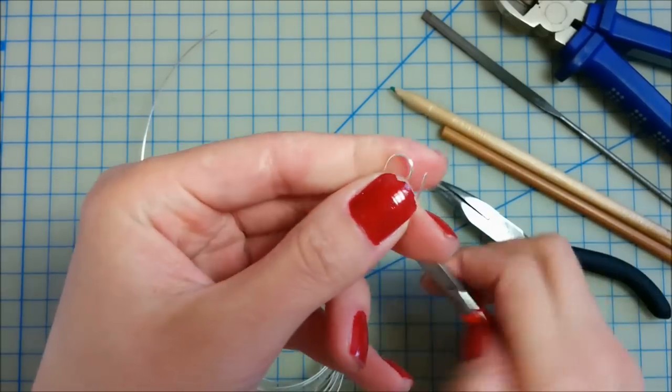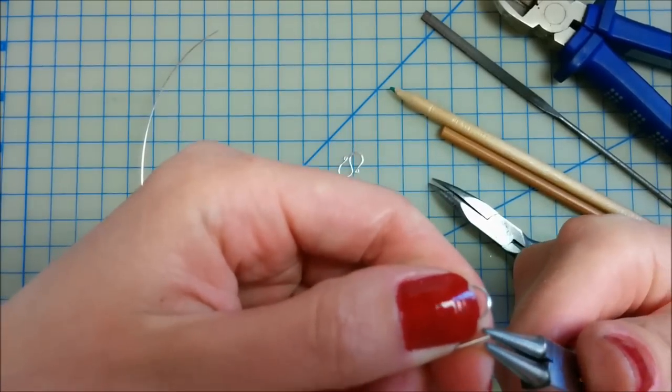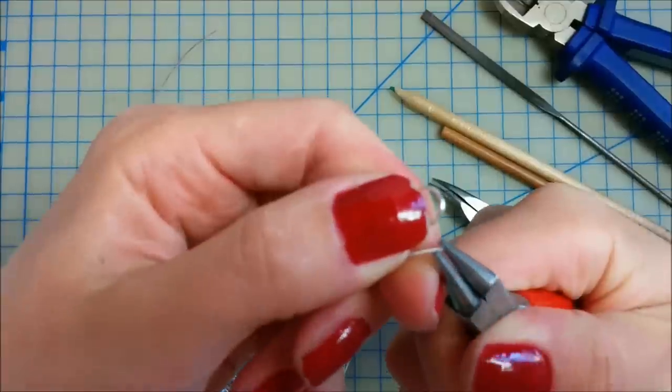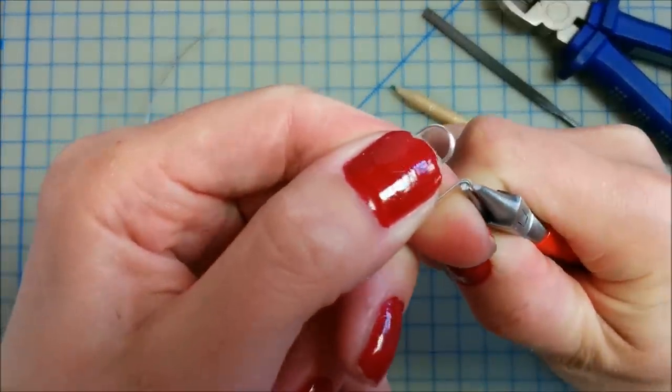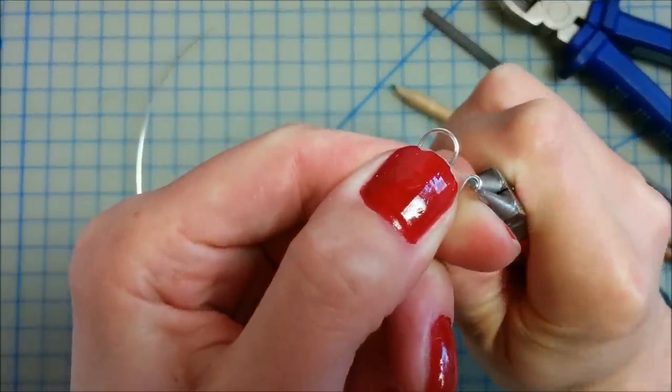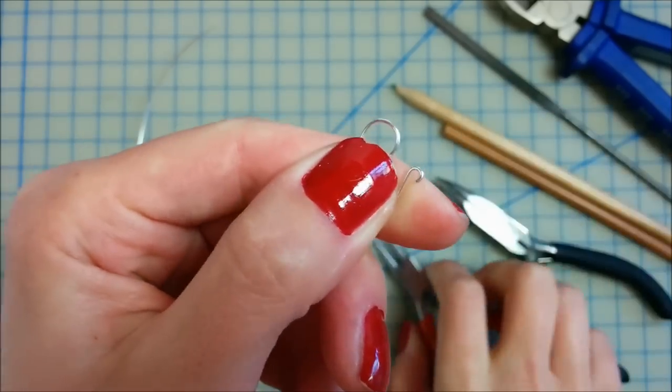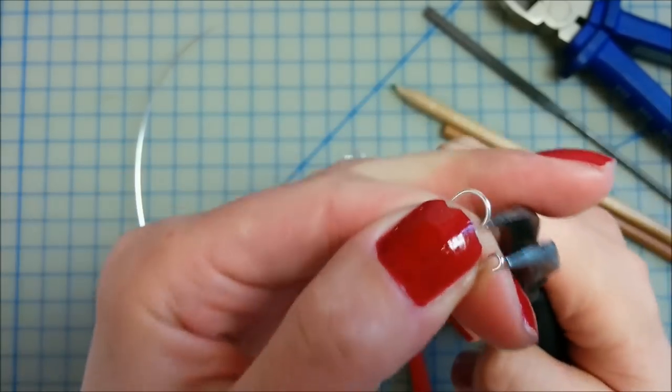And you can repeat, you will repeat on the other side. With the round nose pliers, the small curve, and then close it with your flat nose pliers.